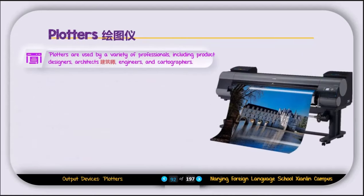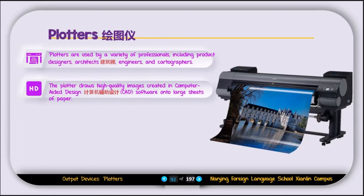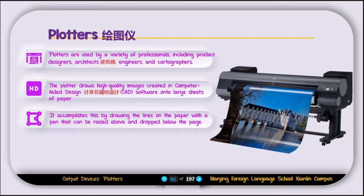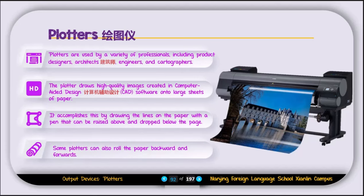The next output device is the plotter. Plotters are used by professionals such as product designers, architects, engineers, and cartographers. The plotter draws high-quality images created in CAD software onto a large sheet of paper using a pen that raises and drops onto the page. Unlike a printer, which prints on small paper like A4, a plotter is used when you need to print on large paper such as banners or Penaflex.